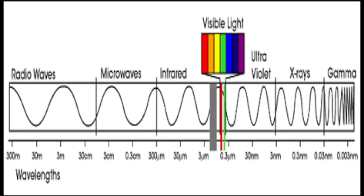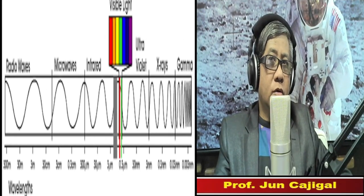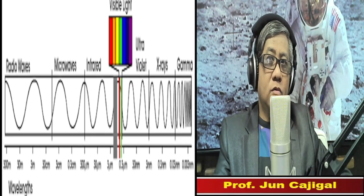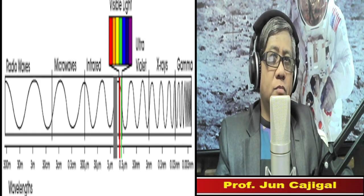Our eyes are only sensitive to the narrow window in our electromagnetic spectrum which is visible light. The other types of radiation like gamma rays, X-rays, microwaves, and UV rays are not visible to the human eye. Isaac Newton performed an experiment wherein he allowed white light to pass through a prism, and that white light was separated into different colors. Each color has its own wavelength signature.